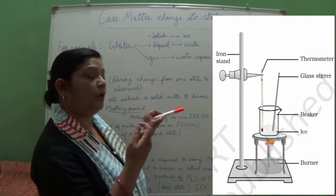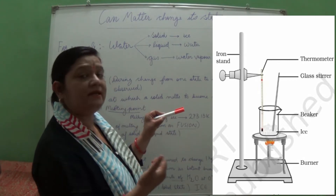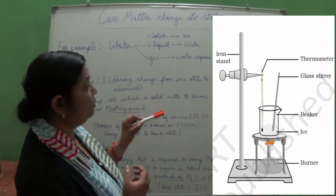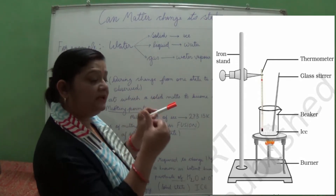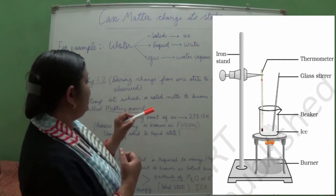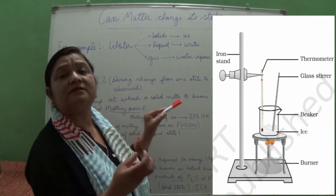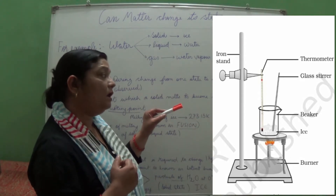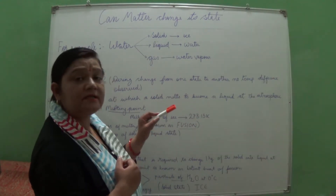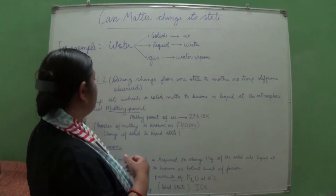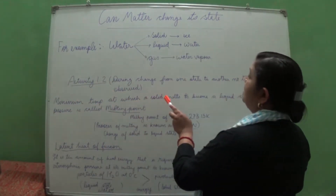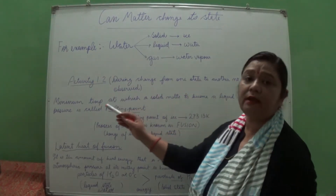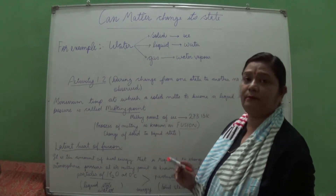When ice is being converted into water it is melting. So let me explain what melting and melting point mean. Melting is the process in which a solid is converted into liquid form. Melting point is the minimum temperature at which a solid melts to become a liquid at atmospheric pressure.